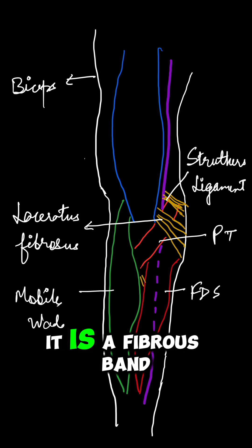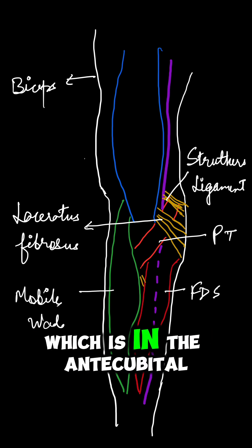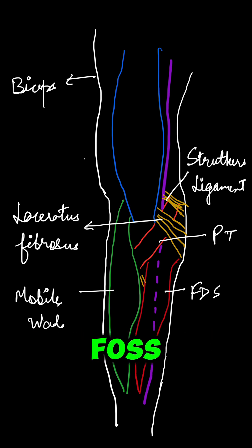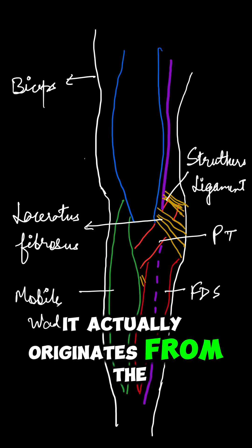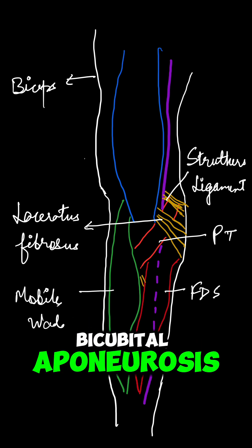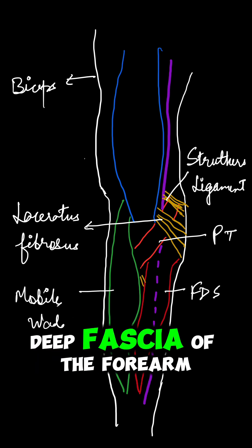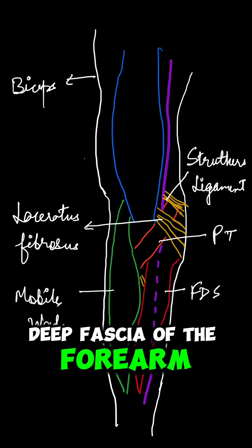Next is lacertus fibrosis. It is a fibrous band which is in the antecubital fossa. It actually originates from the bicipital aponeurosis, then merges with the deep fascia of the forearm.